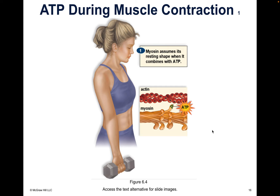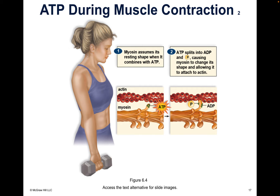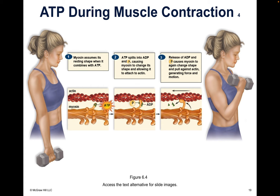ATP during muscle contraction: there are myosin and actin filaments in your muscles. When you move any muscle in your body, they slide past each other to flex and relax your muscles, but they can't do that without ATP. Your myosin filament assumes its resting shape when it combines with ATP, then slides past the actin filament, and ATP splits into ADP. The key takeaway is that actin and myosin slide past each other with the help of ATP, and that is what causes your muscles to move.